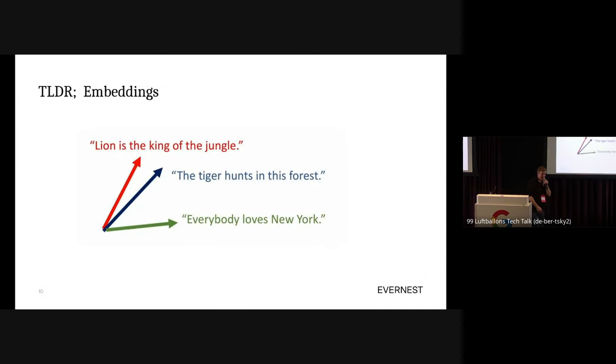Embeddings are a way to encode text in the form of a vector, with the super nice additional feature that semantically similar pieces of text end up as vectors which are close to each other by some similarity metric. For example, 'lion is the king of the jungle' and 'tiger hunts in the forest' are talking about the same thing. 'Everybody loves New York' is different. This is just two dimensions; usually those embeddings are really high dimensional, like hundreds or even thousands of dimensions.